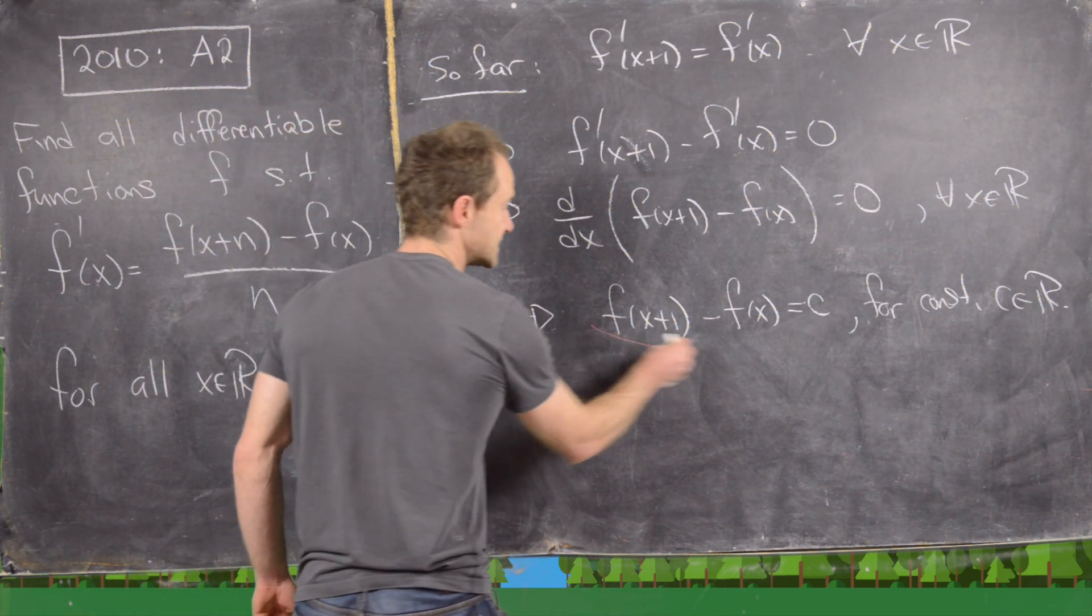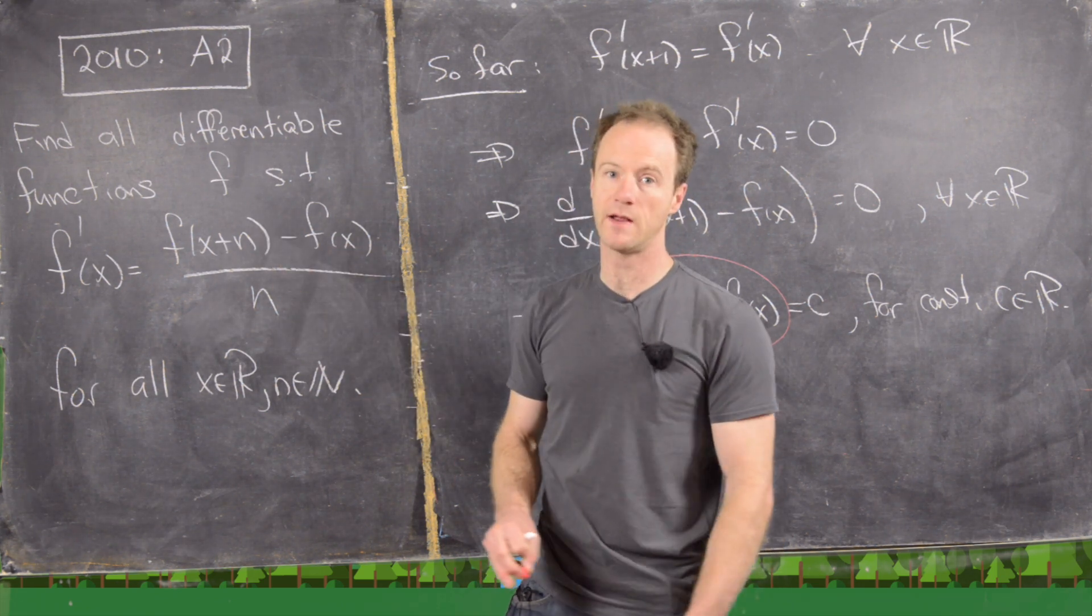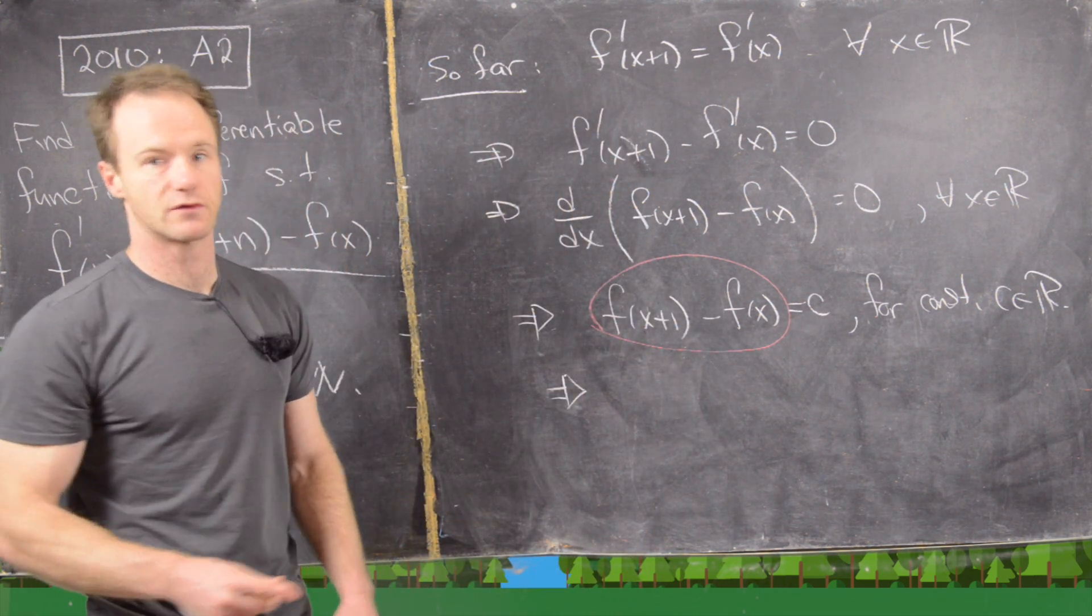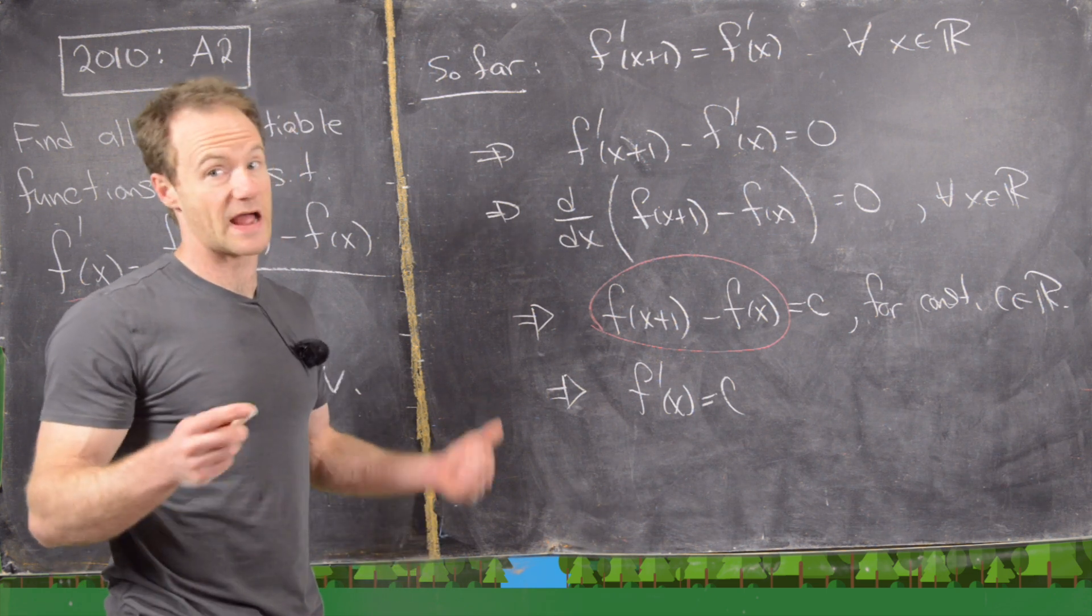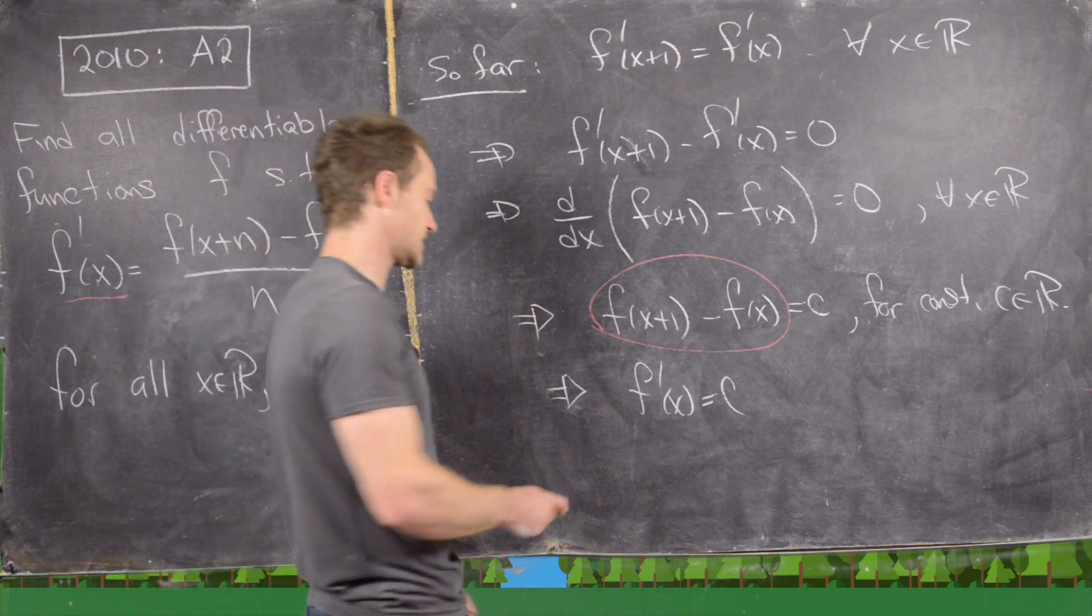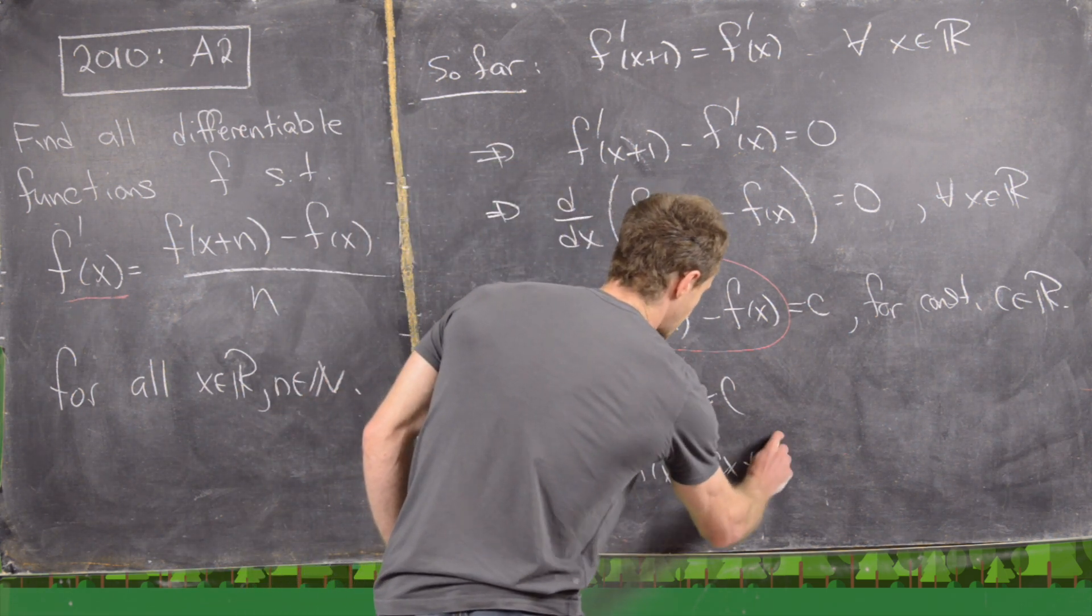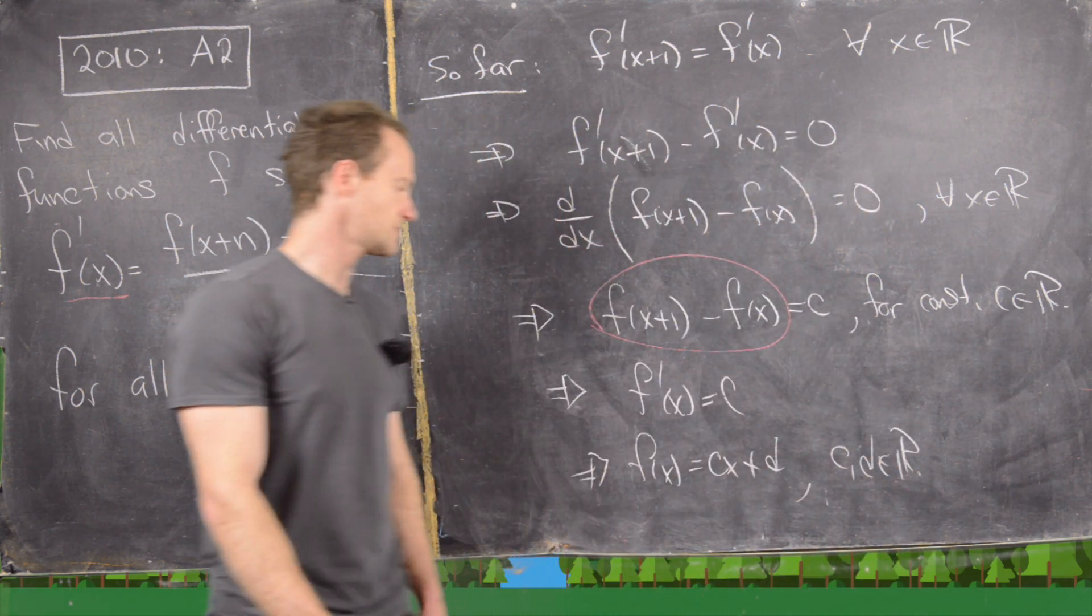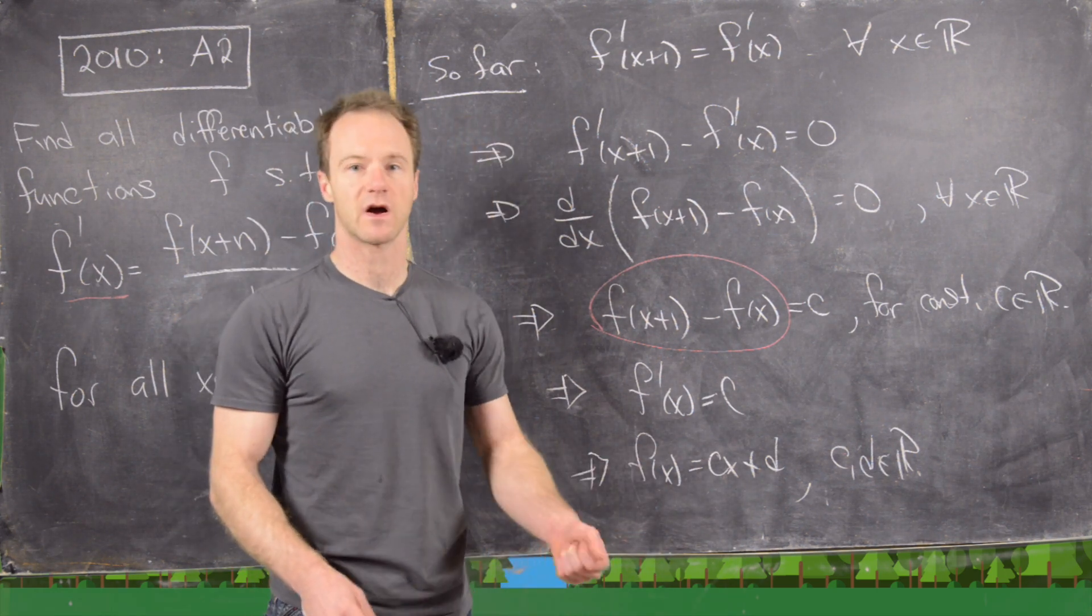But notice that this object right here is exactly this thing on the right hand side with n equals 1. So that means that's equal to f'(x). So we can rewrite this thing that I've circled in red as f'(x) equals a constant. By elementary differential calculus, we know that the only function whose derivative is constant is equal to some sort of linear function. So that means f(x) equals cx plus d. And here maybe c and d are real numbers. So the only type of function that satisfies this setup over here are linear functions. All right, we're done.